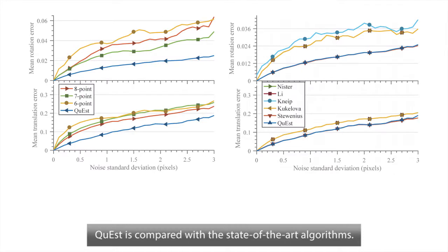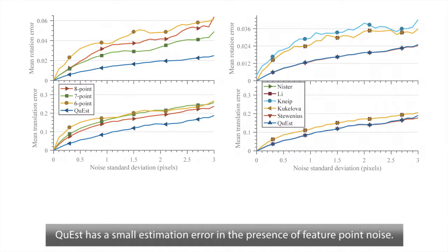Quest is compared with the state-of-the-art algorithms. Quest has a small estimation error in the presence of feature point noise.